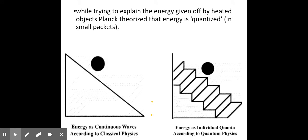Looking at heated bits of matter giving off energy, Planck theorized that maybe energy is not continuous. Maybe it's not that you can have high energy, low energy, and anywhere in between — like a volume button you could turn up or down to any spot. Planck was saying maybe you can only have certain levels: you can have this level of energy or that level, but it is not possible to have somewhere in between those levels. This was Planck's idea of quantized energy.